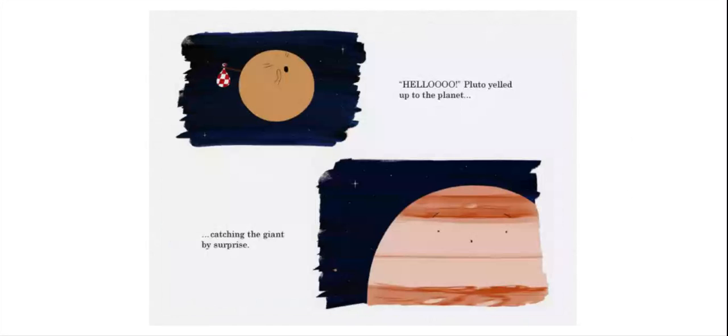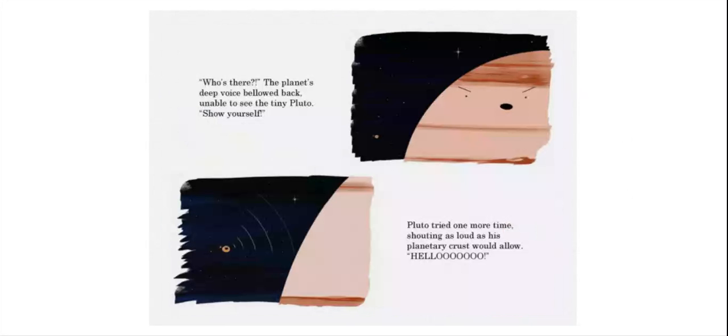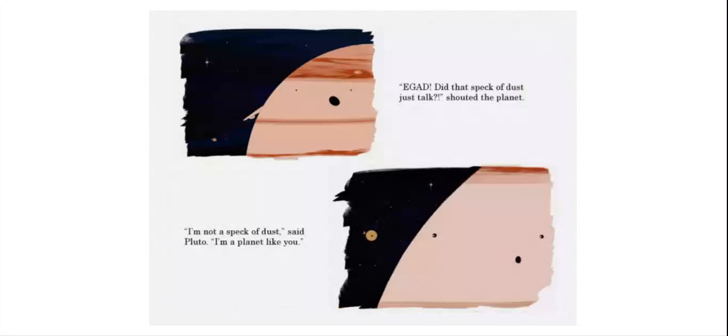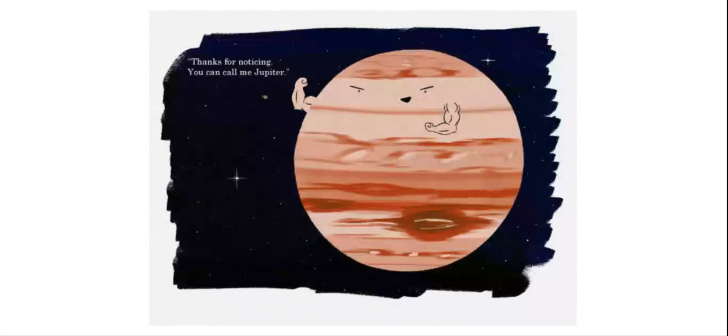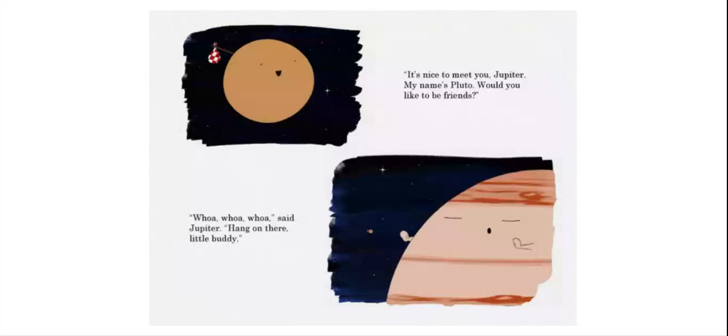Hello? Pluto yelled up to the planet, catching the giant by surprise. Who's there? The planet's deep voice bellowed back, unable to see the tiny Pluto. Show yourself! Pluto tried one more time, shouting as loud as his planetary crust would allow. Hello! Egad! Did that speck of dust just talk? Shattered the planet. I'm not a speck of dust, said Pluto. I'm a planet like you. Like me, you said, the planet said questionably. Yep, but you're so big. I didn't realize planets could be as big as you, Pluto said in awe. Thanks for noticing. You can call me Jupiter. It's nice to meet you, Jupiter. My name's Pluto. Would you like to be friends?